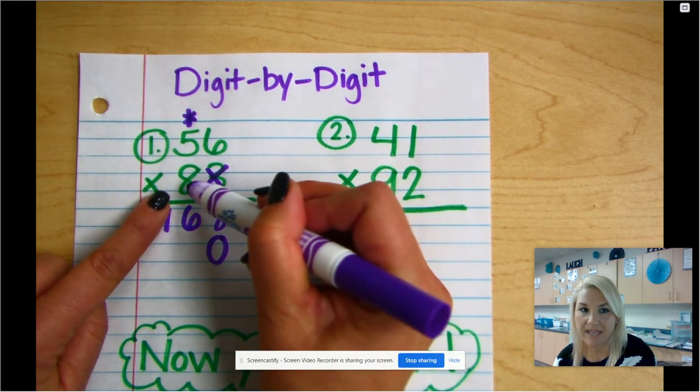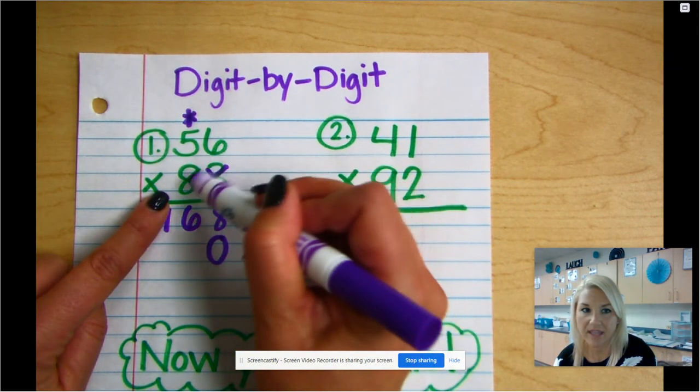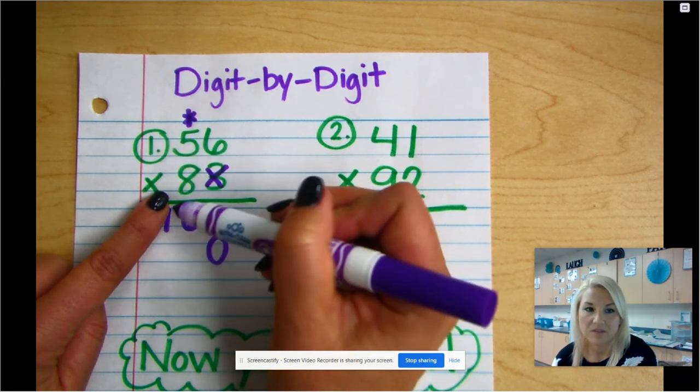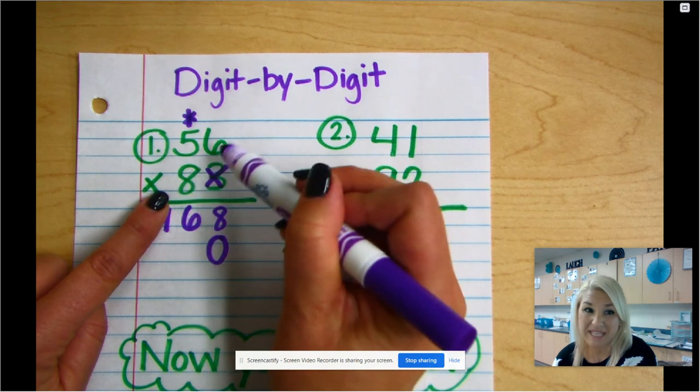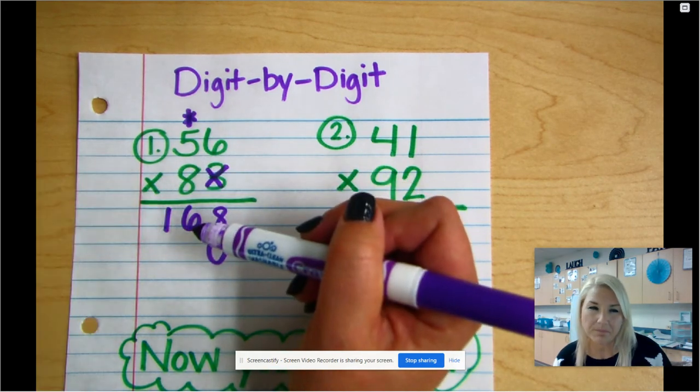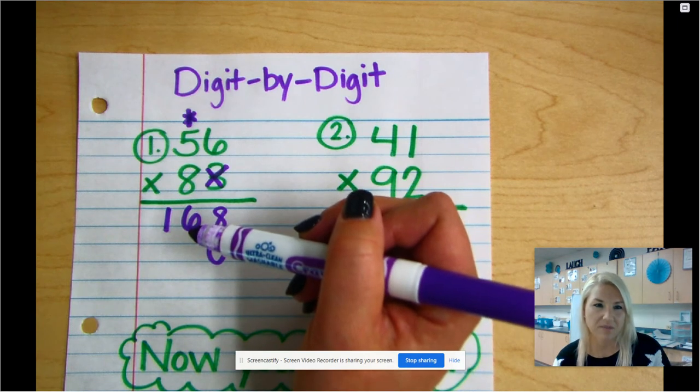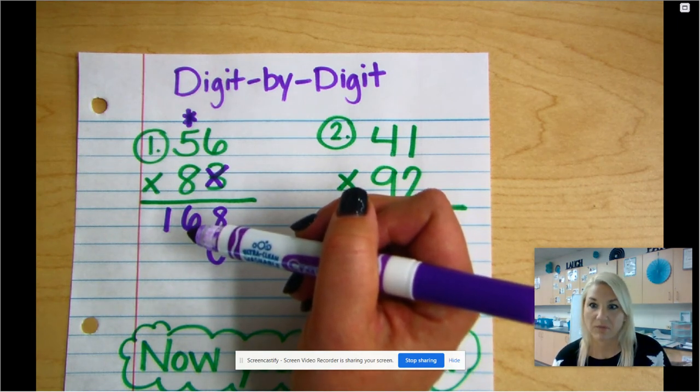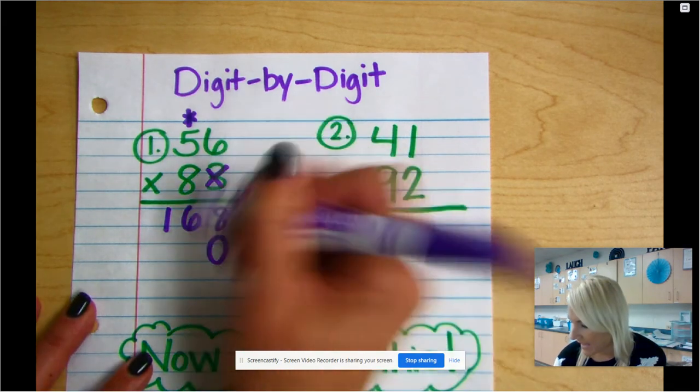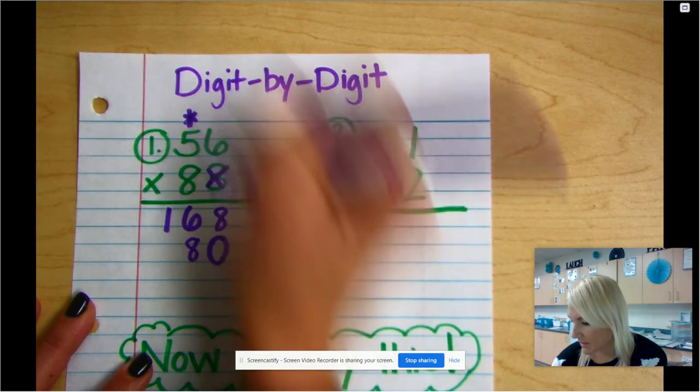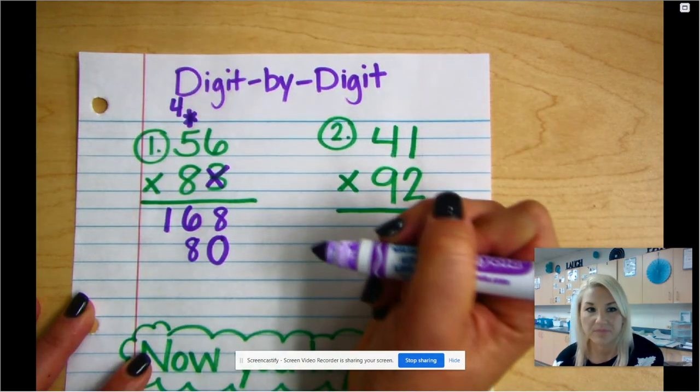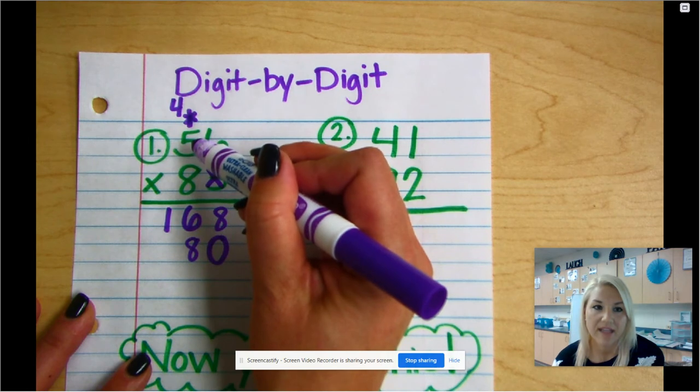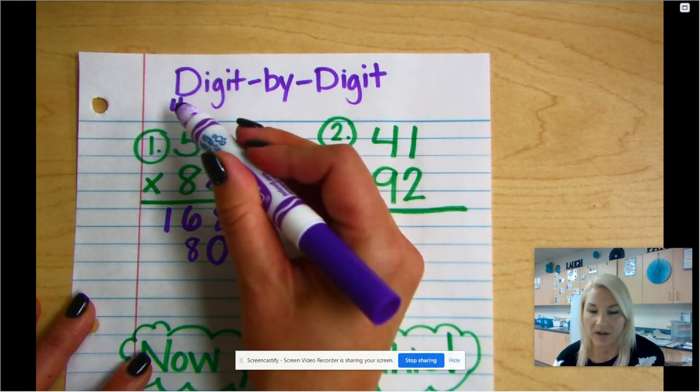And now I'm gonna multiply 8 times 6 and then 8 times 5. Okay, so if I don't know 8 times 6, I know some of you have struggled with your facts, I'm gonna think, hmm, what's 8 times 5? 8 times 5 is 40. Well then 8 times 6 must be 48. So I'm gonna go ahead and write my 8 down here and I'm gonna bring my 4 up. And then 8 times 5 is 40, and then 40 plus 4 is 44.